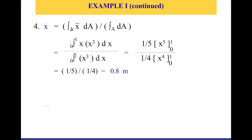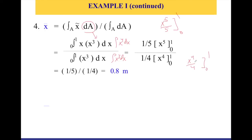Now I have all the elements to find x̄. x̄ equals the integral of x̃ dA over the integral of dA. Substituting: x̃ is x, and dA is x cubed dx, so the numerator is the integral of x times x cubed dx, which is x to the power 4. The integral of x to the power 4 is x to the power 5 over 5. The denominator is the integral of x cubed dx, which gives x to the power 4 over 4. Both evaluated from 0 to 1 gives one-fifth divided by one-fourth, which equals 0.8 meters.